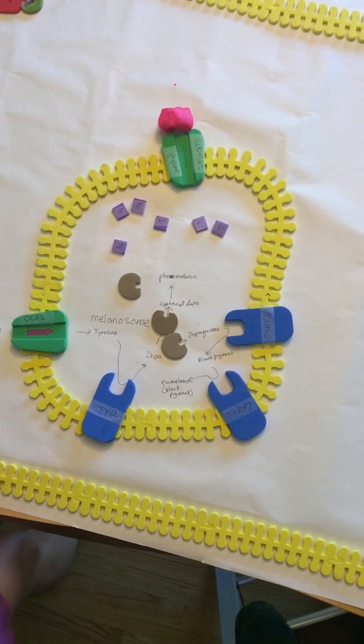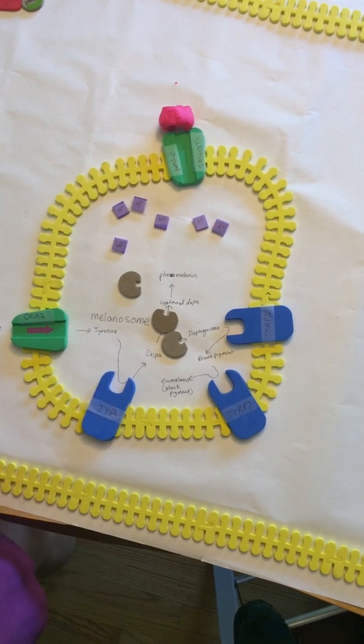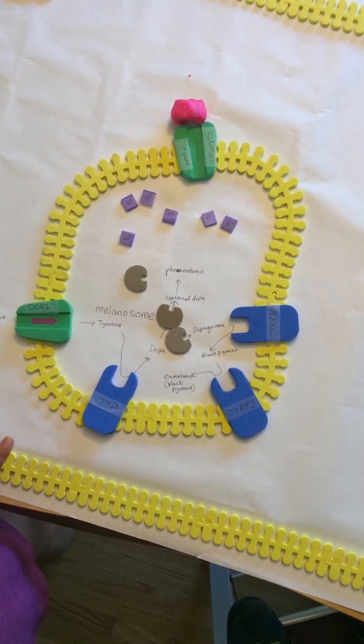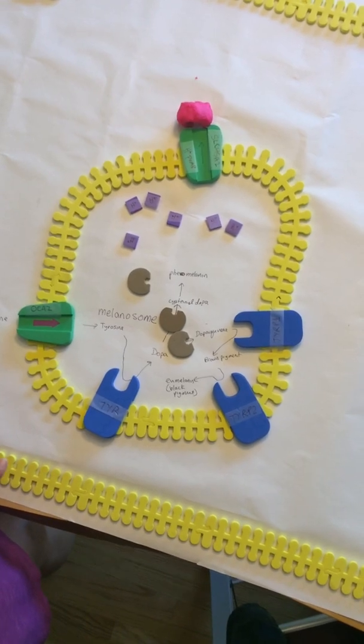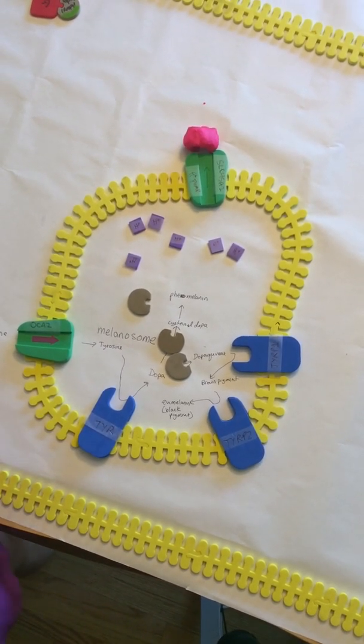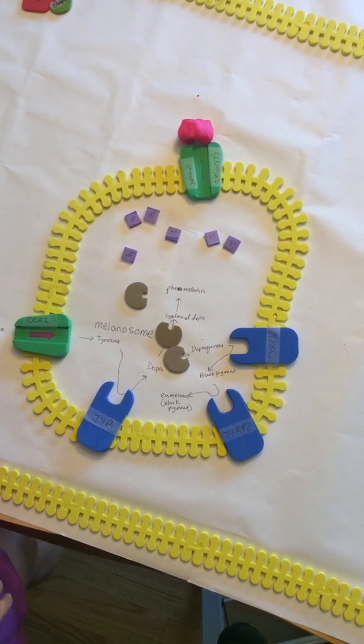Now I'm going to show you how different pigments are produced. Once you see how many different proteins are involved in producing these pigments, you can understand how changes in the genes that code for these proteins can cause different amounts and types of pigments to be produced.